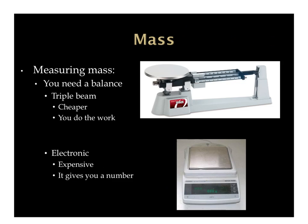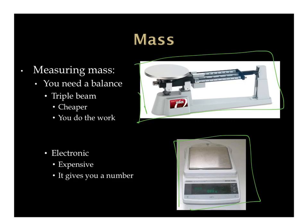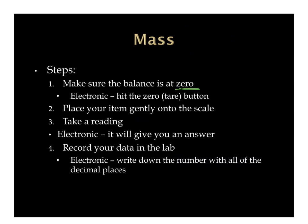Now we'll talk about different devices used to measure aspects of matter. For mass — how much matter is present — we have the triple beam balance, which is more of an antique and we won't really use it. The one we use most often is the electronic balance. It's slightly more expensive but gives you a number quickly and easily. Make sure it's zeroed out, place your item gently on the scale, take a reading, and record it in your data.